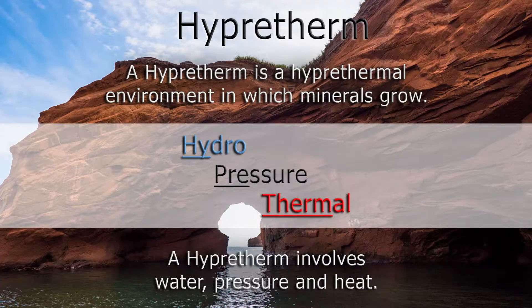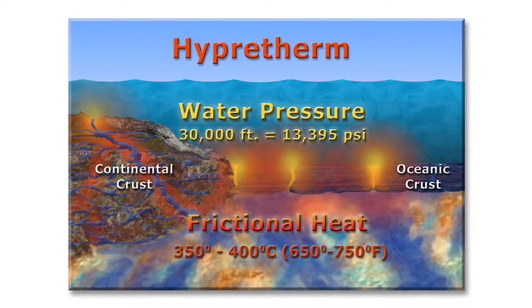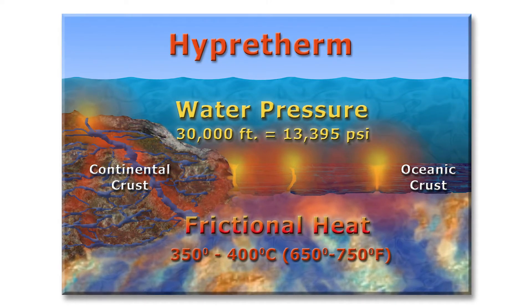Rocks are made in a hypertherm. The nice thing about a hypertherm is that it gives us the exact numbers needed to form quartz and other crystals. We need at least 14,000 psi pressure and about 375 degrees Celsius. When we put these into what we call an autoclave — a pressurized environment with the right amount of air and a couple other things — it's like a recipe.